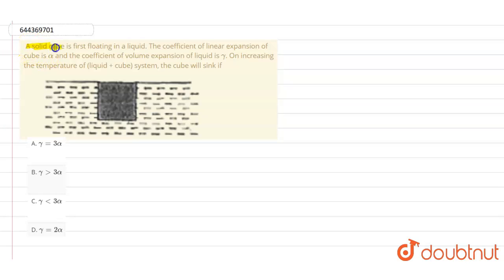It is given that a solid cube is first floating in a liquid. The coefficient of linear expansion of the cube is represented with alpha and the coefficient of volume expansion of the liquid is represented with gamma. On increasing the temperature of liquid plus cube, that means the entire system, the cube will sink if...